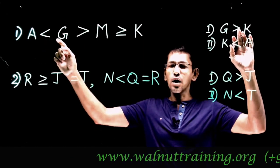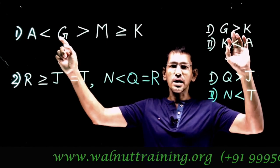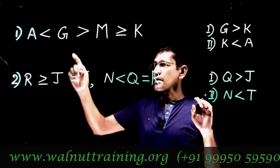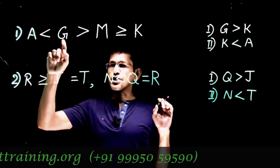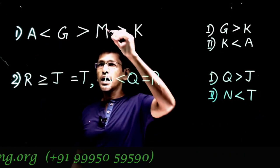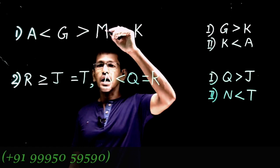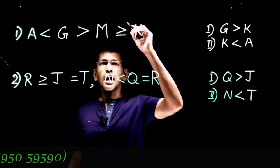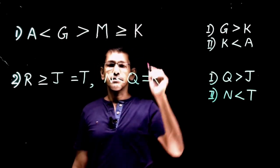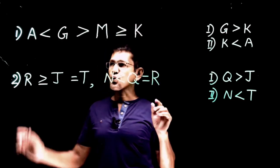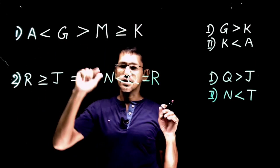Question number one: a is less than g, and g is greater than m, and m is greater than or equal to k. That is what the statement says.